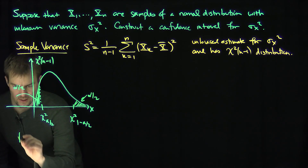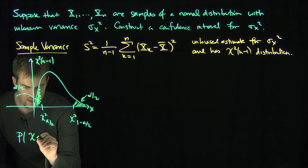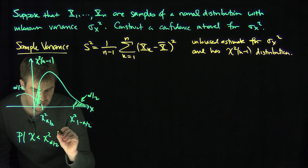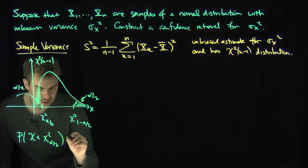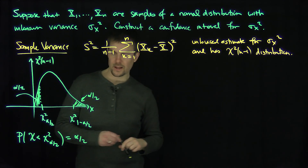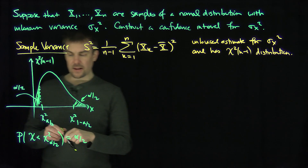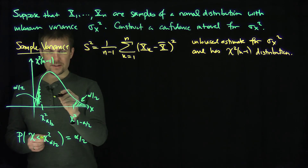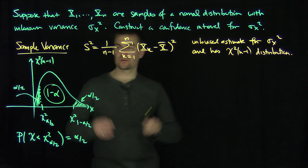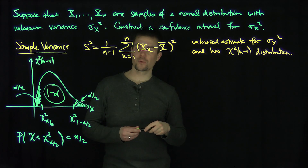In other words, the probability that a chi-squared random variable chi is less than chi-squared alpha over 2 equals alpha over 2 — that's a percentile. In general, putting p there gives p here. So exactly 1 minus alpha of the mass resides in that middle hump of the chi-squared distribution.